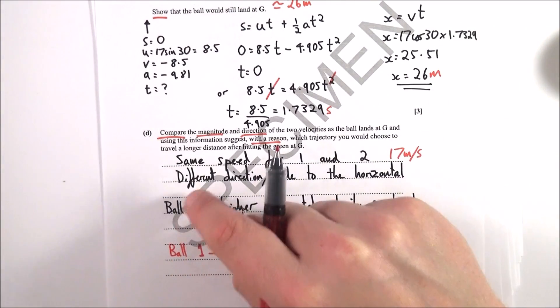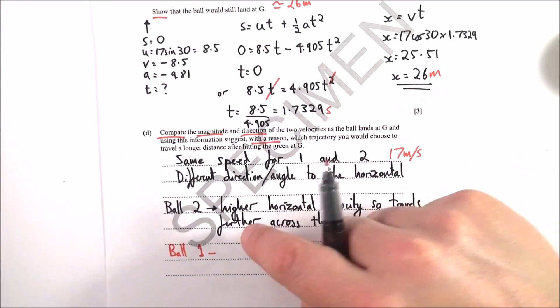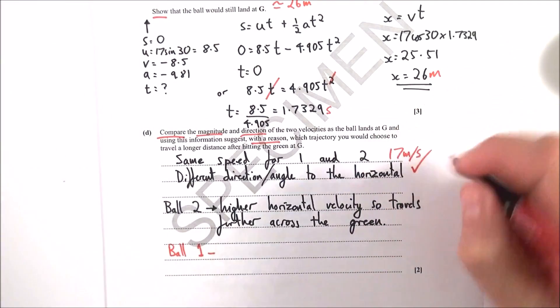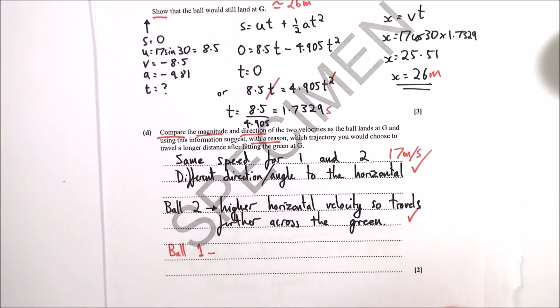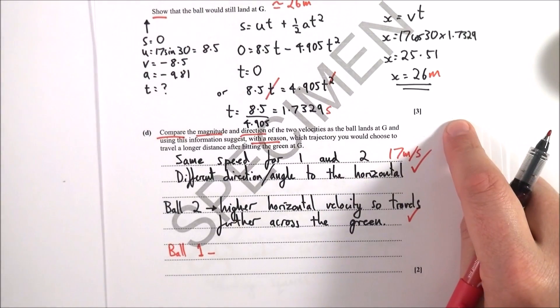So it doesn't matter if you have ball one or ball two as long as you can back it up with some reasoning. So some of that is very much common sense. You basically get one mark for stating that and one mark for stating if it's ball one or ball two with your bit of justification. So that's question two, now on to question three.